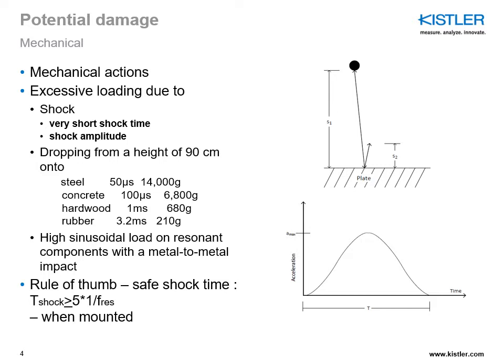A general rule applicable to shock measurement is that the shock time should always be longer than five times the period of natural resonance for the accelerometer when mounted. Dropping from a height of one meter onto a steel or concrete surface can easily result in a shock greater than 1000 G with a half-sine shock time of about 100 microseconds. If the shock time at the same amplitude becomes even shorter, there is even more potential for damage.